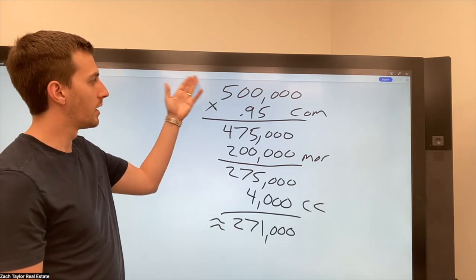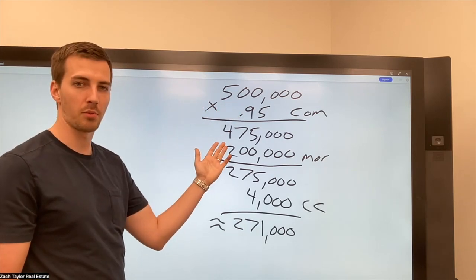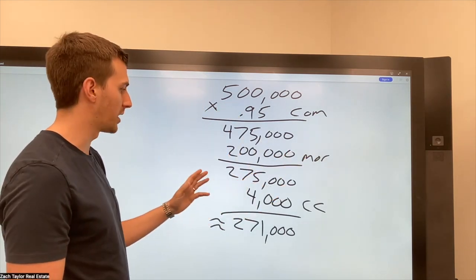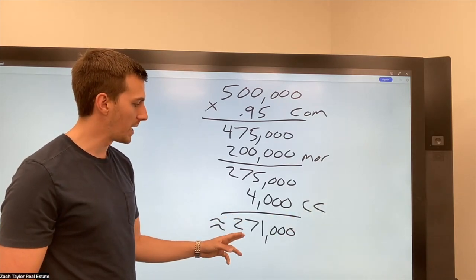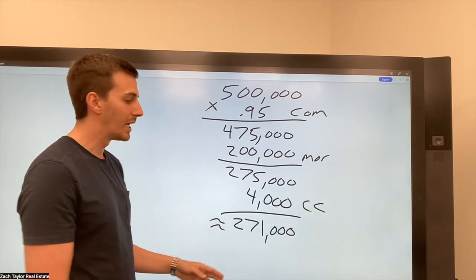So if they sell it for 500,000, 5% commission, $200,000 mortgage, it's paid off when it's closed, 4,000 in closing costs, they're going to make roughly $271,000.